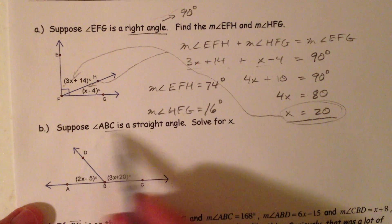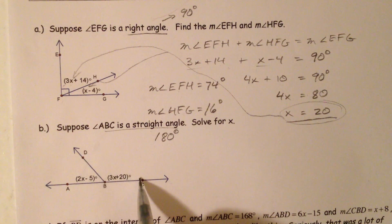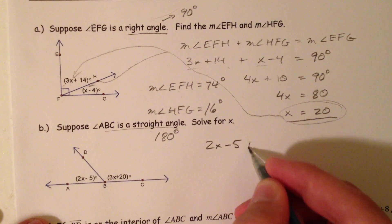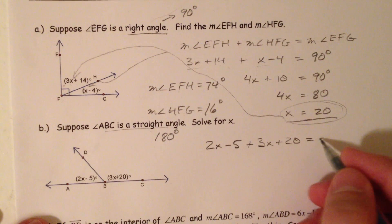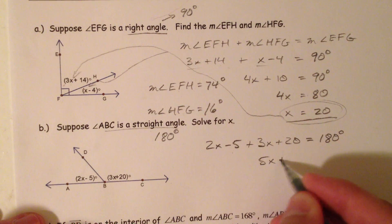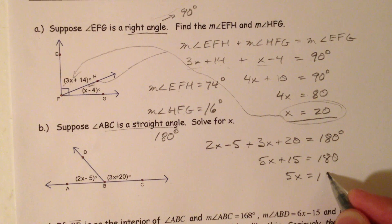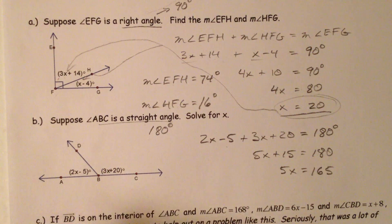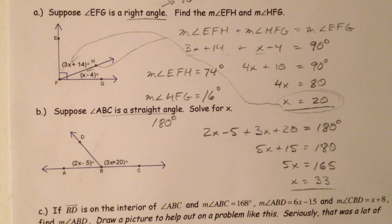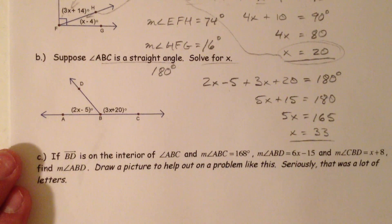Next problem: angle ABC is a straight angle, so it's 180 degrees. This is very similar, except we use 180. So (2X − 5) + (3X + 20) = 180. Combining: 5X + 15 = 180, subtract 15 from both sides to get 5X = 165, then divide by 5 to get X = 33. You could plug that back in to find the two angles and double-check that they add up to 180.